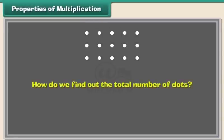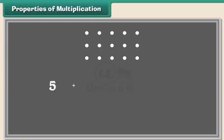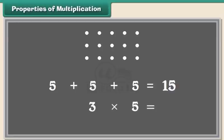Now let us learn some properties of multiplication. Look at these dots. There are 3 rows, and in each row there are 5 dots. To find the total number of dots, we add 5 three times. In other words, we calculate 3 multiplied by 5, which is equal to 15.